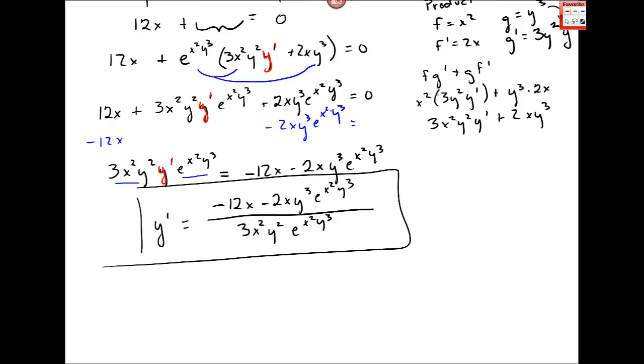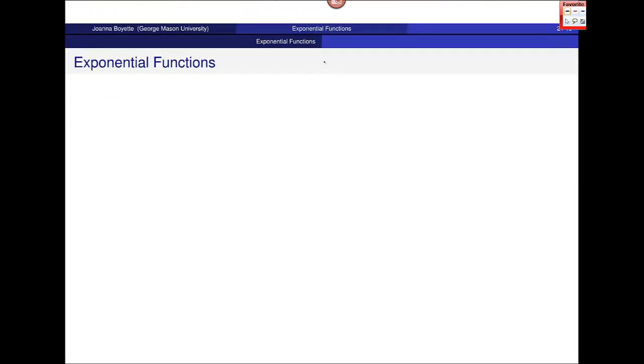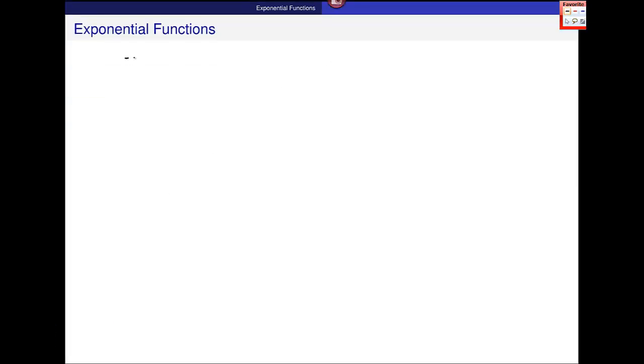Now let's do one more example which looks like this. 7y squared plus e to the 3xy is equal to 8x. And again I have this piece involving y and this one. And 3xy will require the product rule again. So I'm going to do that piece first.